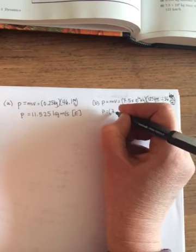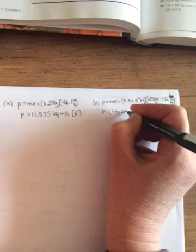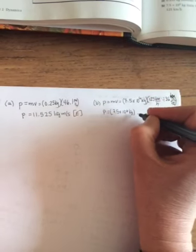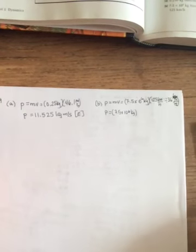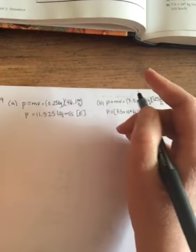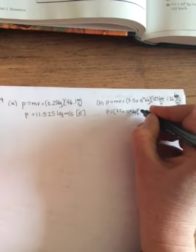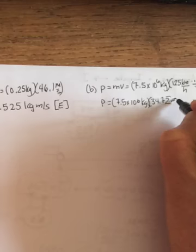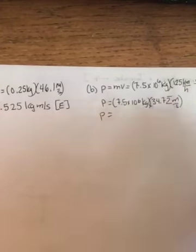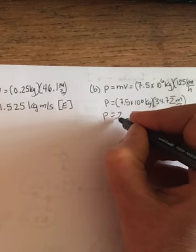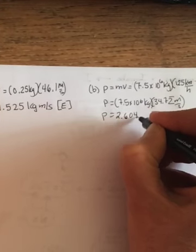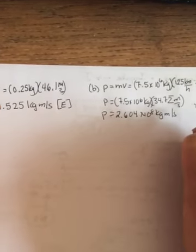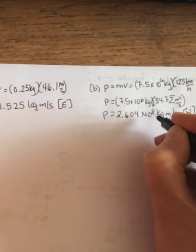So 7.5 times 10 to the 6 kilograms, and when you switch that, it's 34.72 with the two repeating meters per second. And so your momentum is 2.604 times 10 to the eighth kilogram meters per second. And it told us the train was going west, so the momentum is west.